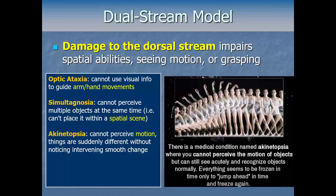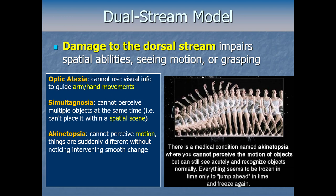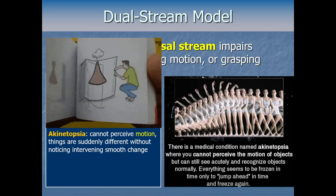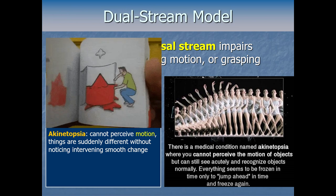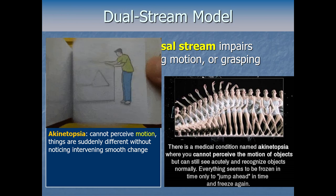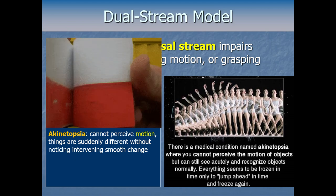Another condition from dorsal stream damage — if the damage occurs in area V5 — is akinatopsia, where the patient becomes unable to perceive motion or movement. The prefix 'a' means lack of, and 'kinet' refers to movement, so it literally means 'lack of movement sight.' Patients see everything as suddenly jumping around — almost as if real life has really high latency in an online video game, rather than things moving smoothly. Like a flip book: each page is a static image, but our brain fuses them into perceived motion. Television and movies work the same way — a series of static images in quick succession — but someone with akinatopsia doesn't have that function working.